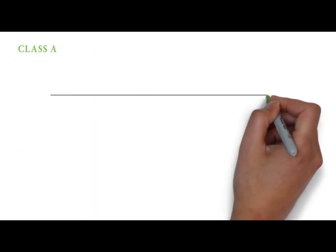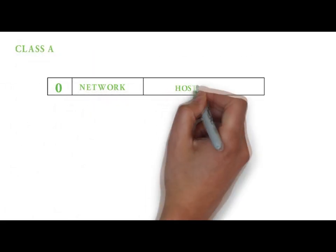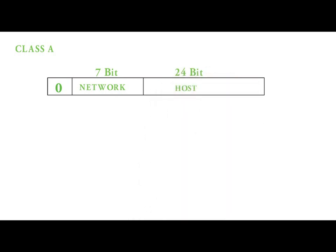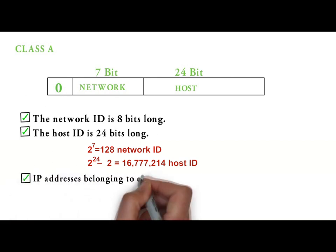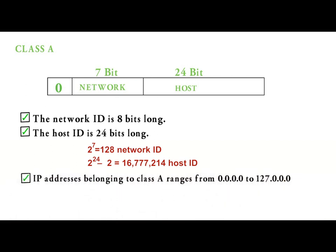In class A IP addresses, the network ID is 8 bit long and the host ID is 24 bits long. It has 128 network IDs and approximately 16 million host IDs. IP addresses belonging to class A range from 0.0.0.0 to 127.0.0.0.